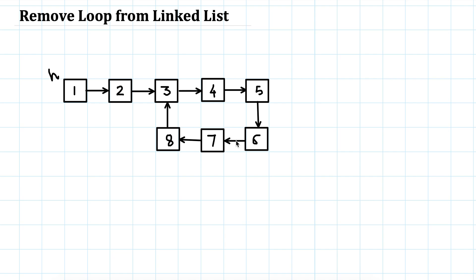Hello friends, in this video we are going to see how to remove a loop from a linked list. We have been talking about identifying a loop in the linked list and finding out the first element that belongs to the loop. We used Floyd's algorithm for those, and today we will again use Floyd's algorithm to remove the loop. If you have not watched my earlier videos, I would request you to go to my previous videos and see how to find the first element — in this case, 3 is the first element which is part of the loop.